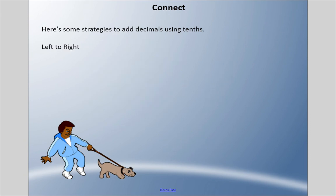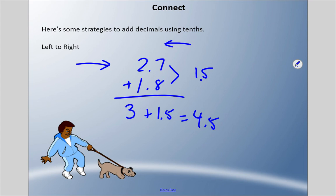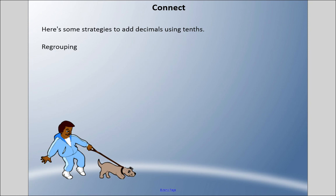We could do this another way called the left to right method. I'm going to write this out again. In this situation, we're going to add this way—left to right, hence the name. Two plus one is three. Here I have 15 if I add those together. However, that 15 is tenths, so I would have a decimal there. Three and one and a half equals four point five, or four and a half kilometers. So in this way, we're adding the whole numbers first, then we add the tenths column together, and then we add them all together.